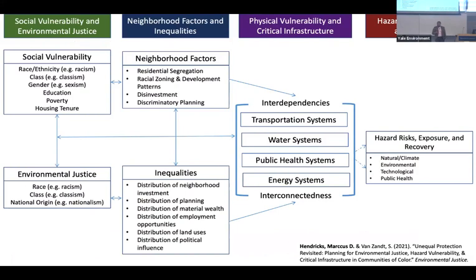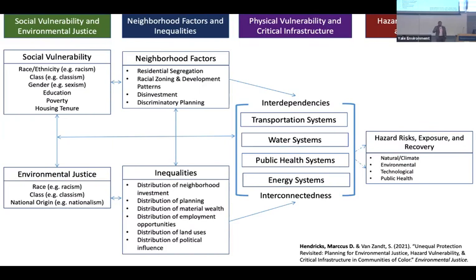I unpack this phenomenon in a piece entitled 'Unequal Protection Revisited: Planning for Environmental Justice, Vulnerability, and Critical Infrastructure in Communities of Color,' discussing how communities of color have been underserved or unserved altogether, leading to a decaying built environment that puts them at risk of climate-induced hazard events. The conceptual framework I present shows how social vulnerability and environmental justice variables lead to neighborhood inequalities that have direct consequences for physical vulnerability and critical infrastructure, inevitably connecting to hazard risk exposure and recovery. I want to emphasize that Black folks and poor folks aren't inherently vulnerable — it is the larger processes of racism, classism, and sexism that systematically corner people into these precarious situations.